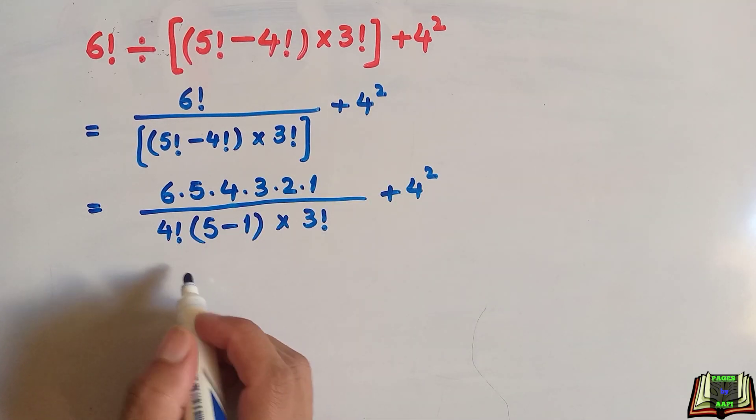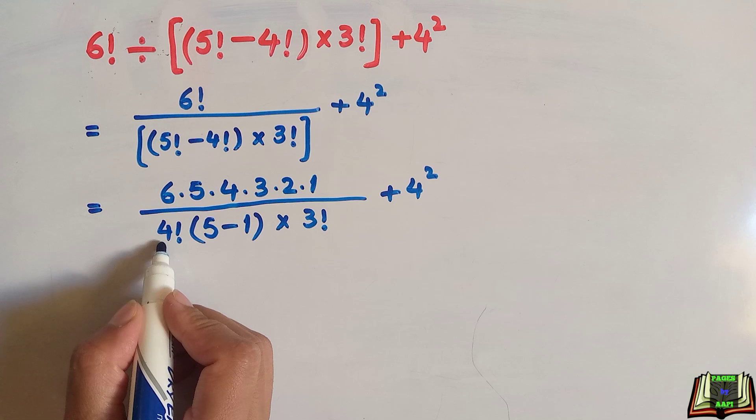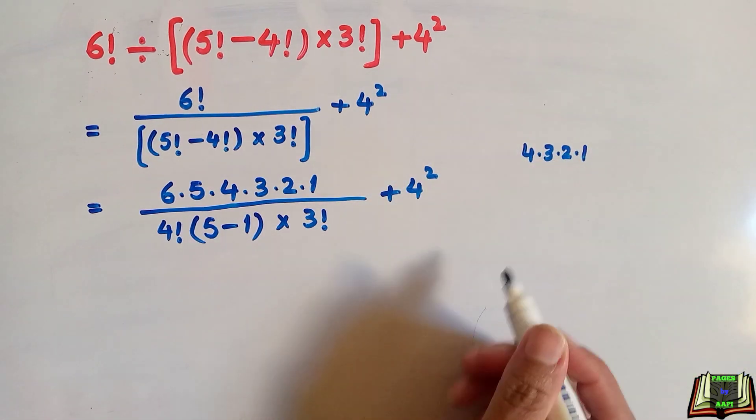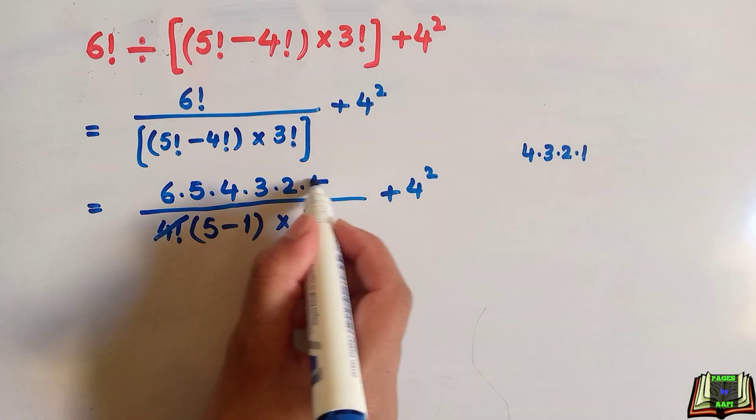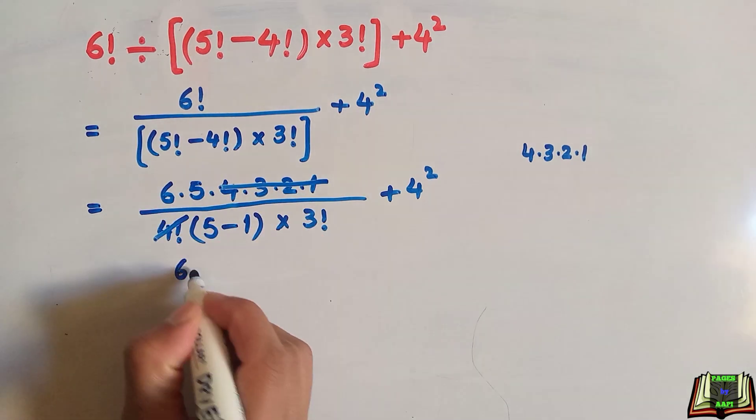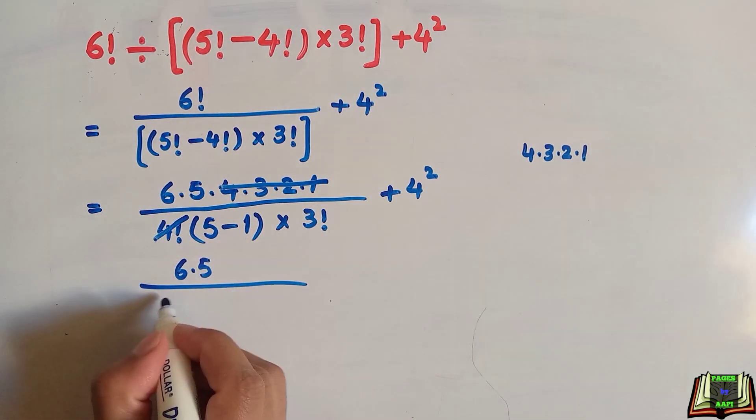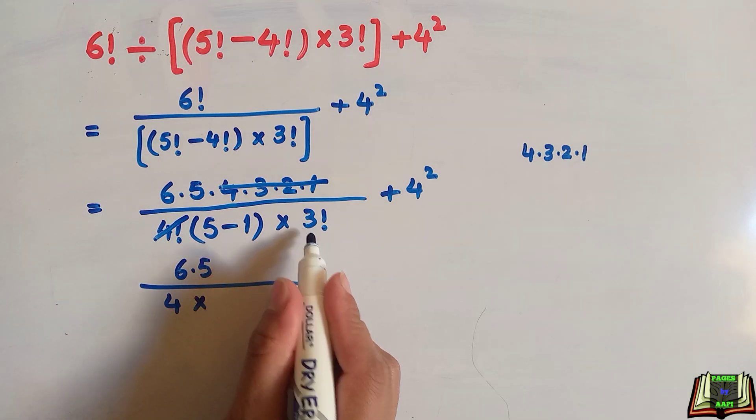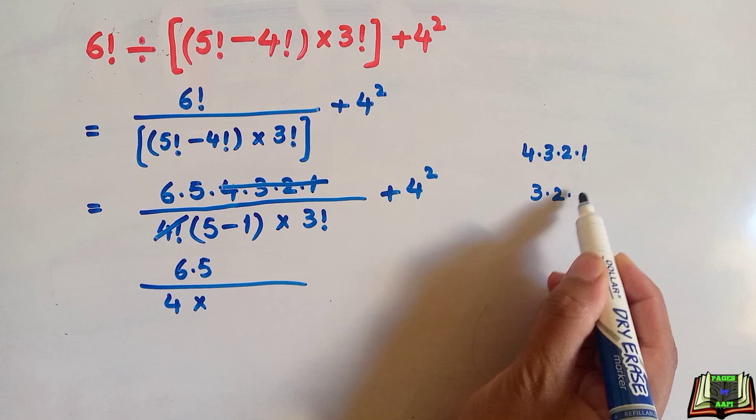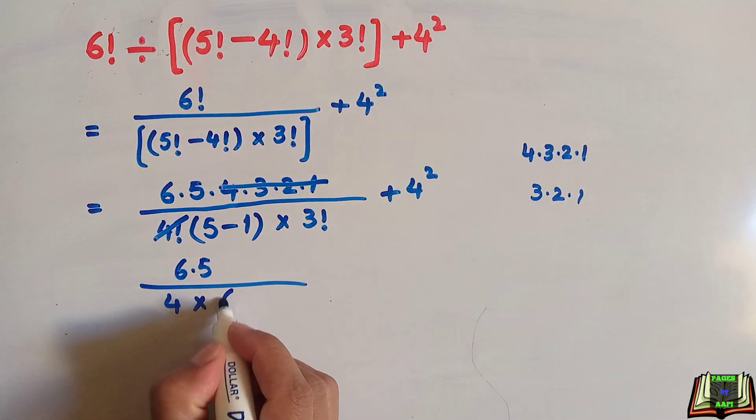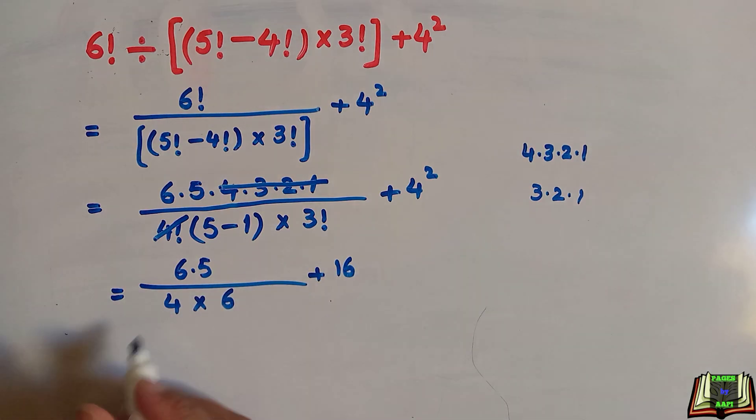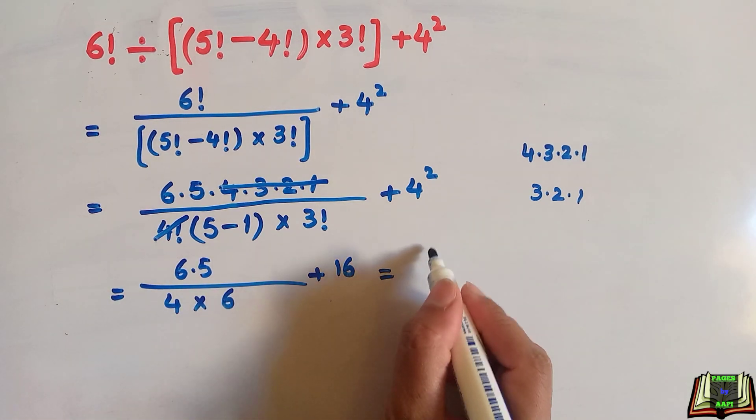We know that 4 factorial is the same as 4 times 3 times 2 times 1. So this 4 factorial will be cancelled out. We have 6 times 5 divided by 5 minus 1 is 4, multiply by 3 factorial, which is equal to 3 times 2 times 1, which equals 6, plus 4 squared is 16.